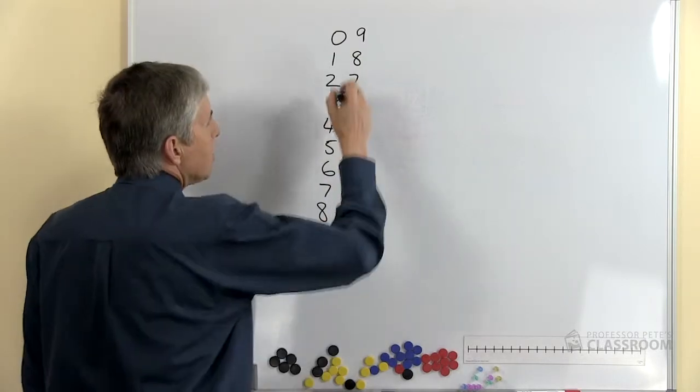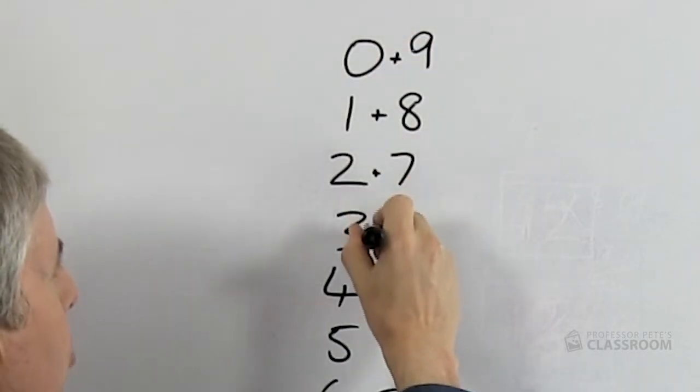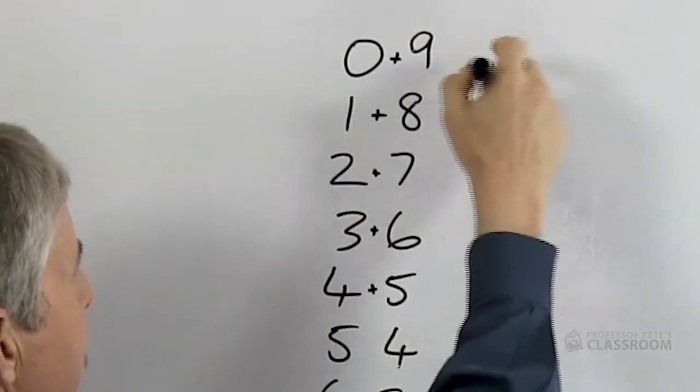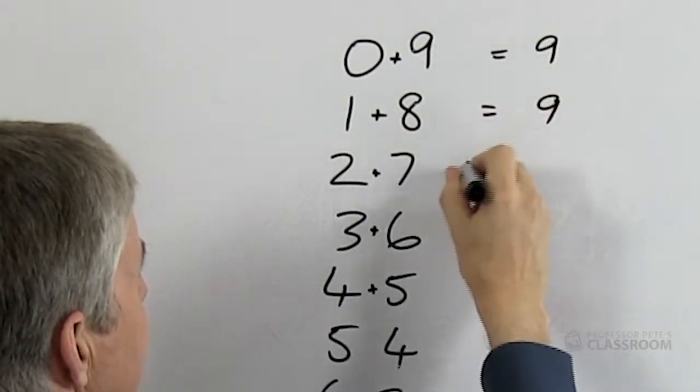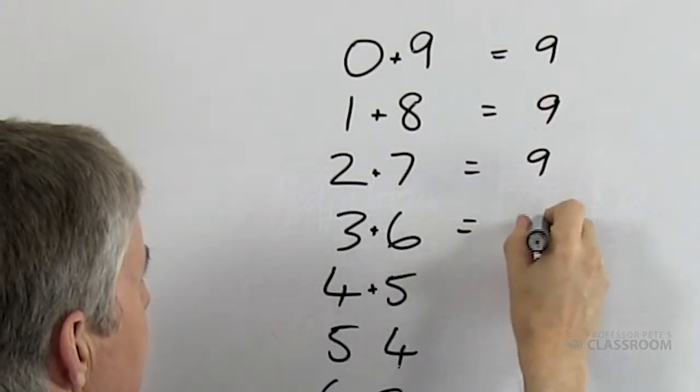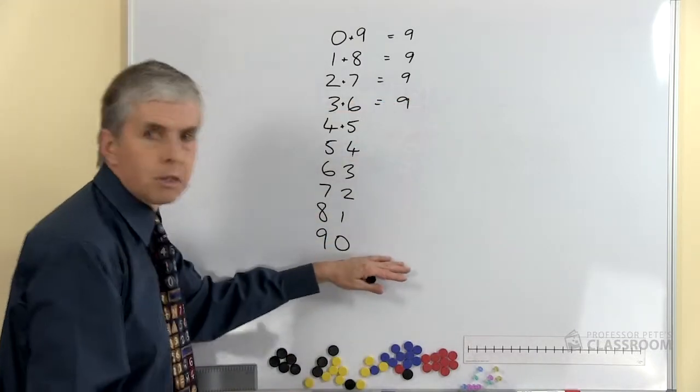Look at something else. If we were to add these two digits together, what would we get in each case? Zero plus nine equals nine. One plus eight equals nine. Two plus seven equals nine. Three plus six equals nine. This is true for all these multiples of nine.